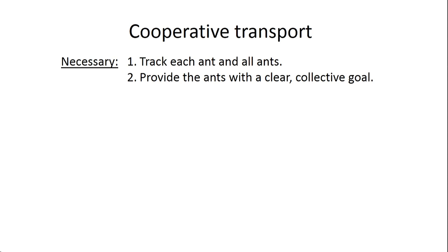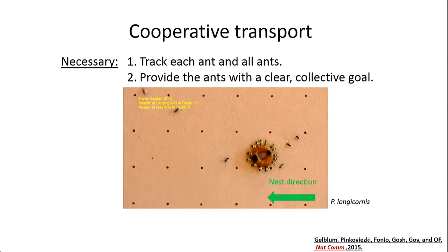Luckily with the ants it's a bit simpler. All we have to do is go to the nearest grocery shop, get a box of Cheerios, take one of them, go outside to the field near our building, and put this Cheerio near the ant nest. We get all this for the price of a Cheerio. First, we've provided the ants with a very clear goal: they want to get this Cheerio from where it is to the nest as fast as possible — well defined, we know exactly what they're trying to do. And this is a collective behavior; no ant can move it on her own, it's very heavy for a single ant. So we get a collective goal.